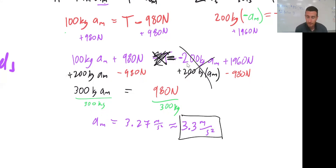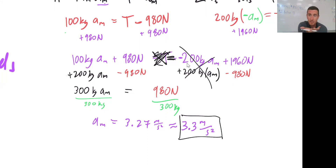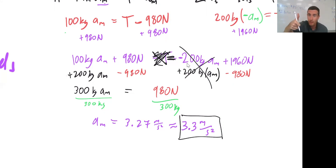The man accelerates upwards at 3.3 meters per second squared, and the set comes down at 3.3 meters per second squared. That seems reasonable — it's less than 9.8 meters per second squared because if the man wasn't there, the set would just free fall at 9.8. He's providing a counterweight, slowing it down and reducing its acceleration. Somewhere less than 9.8 makes sense, and 3.3 meters per second squared seems within the realm of possibility.